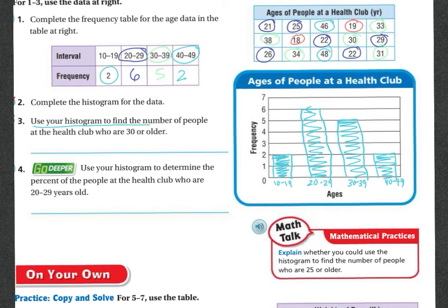Now it says, use your histogram to find the number of people at the health club who are 30 or older. So if I'm looking here, 30 or older, that would be this group and this group. So that means I'm going to combine the 5 plus the 2, and I'm going to get 7. So 7 people are older than 30. Last but not least,